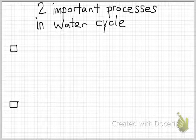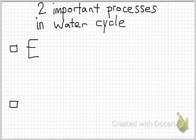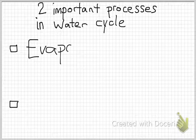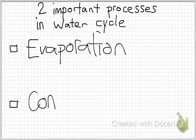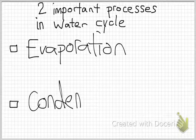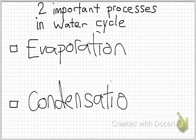Now, the two important processes in water cycle are evaporation and condensation. Please remember how to spell evaporation and condensation. Two important processes for the water cycle are evaporation and condensation.